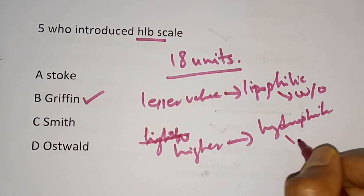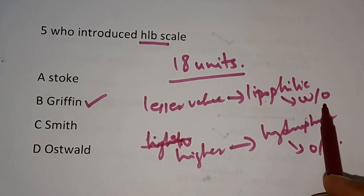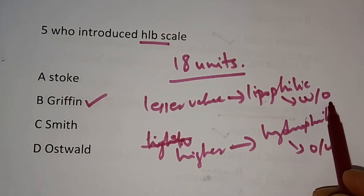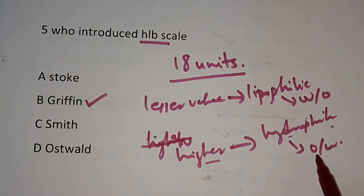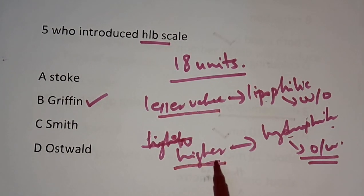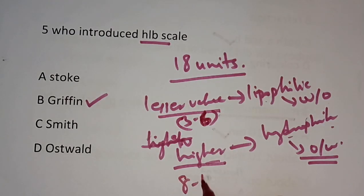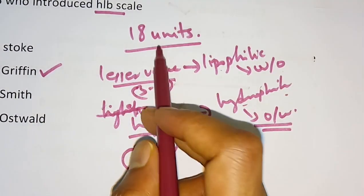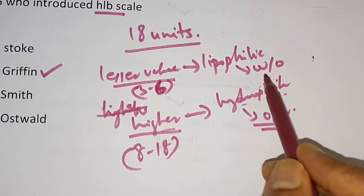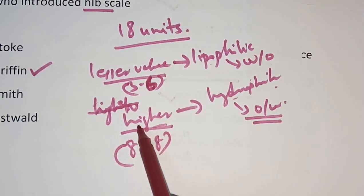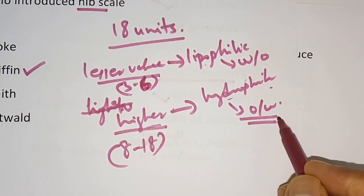Lower HLB value (around 3 to 6) corresponds to lipophilic emulsifying agents and produces water in oil type emulsion. Higher HLB value (around 8 to 18) corresponds to hydrophilic emulsifying agents and produces oil in water type emulsion.